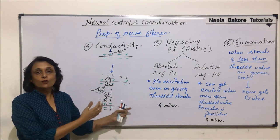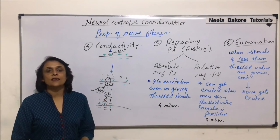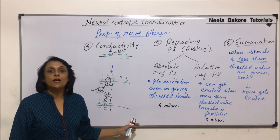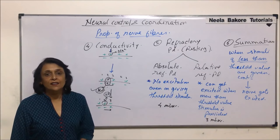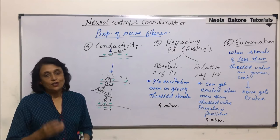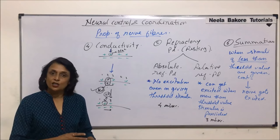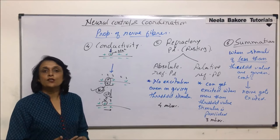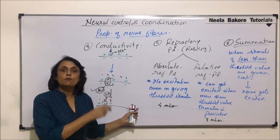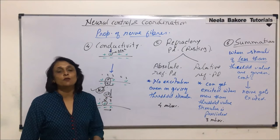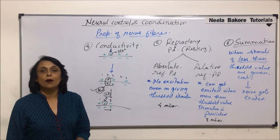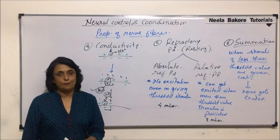These are the unique and special properties shown by nerve fibers. Understanding these properties is slightly difficult, but they become much clearer after we understand the process of generation of a stimulus and conduction. As we discuss conduction of the stimulus, these different properties will be revisited. In the next segment, we'll talk about conduction of nerve impulse.